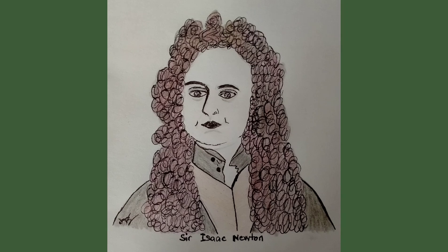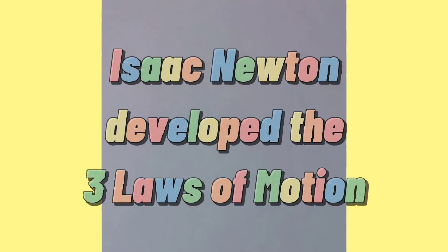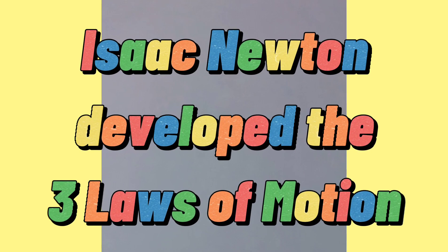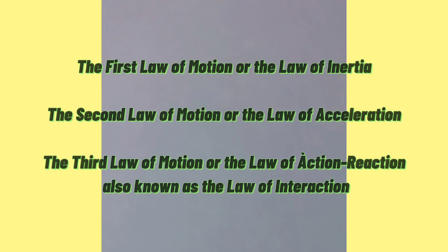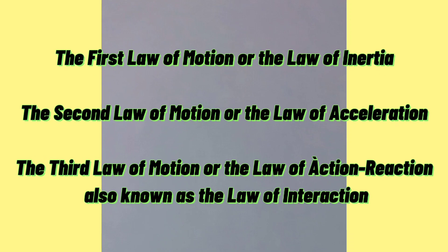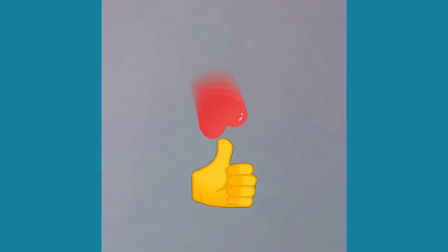He is the one who formulated the three laws of motion. And these are the following: First law, the law of inertia. Second law, the law of acceleration. And the third law, the law of action-reaction, which is also known as the law of interaction. Do you want to know more about the laws of motion? Okay, let's discuss them one by one.